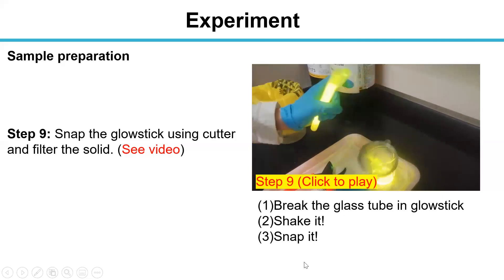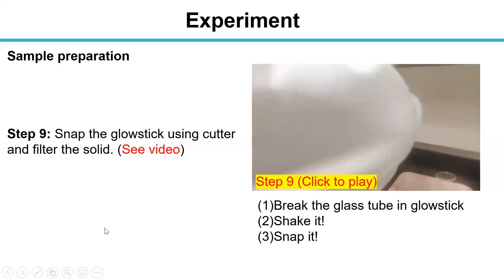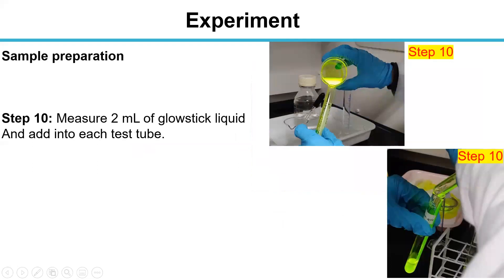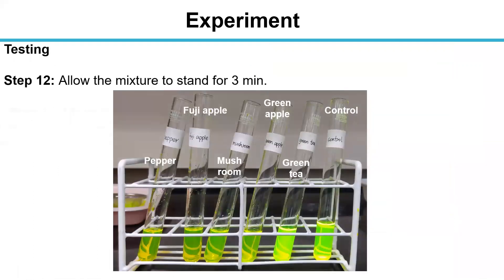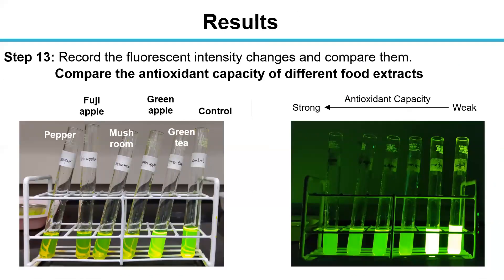Now we go to the next step. In step 10, 2 ml of glow stick liquid is measured and added into each test tube respectively. Then measure 2 ml of ethyl acetate extract of food substances and add into each labelled test tube. Then allow the mixture to stand for 3 minutes. In step 13, we record the fluorescence intensity changes and compare them. We have 6 samples: pepper, Fuji apple, mushroom, green apple, green tea, and a reference.